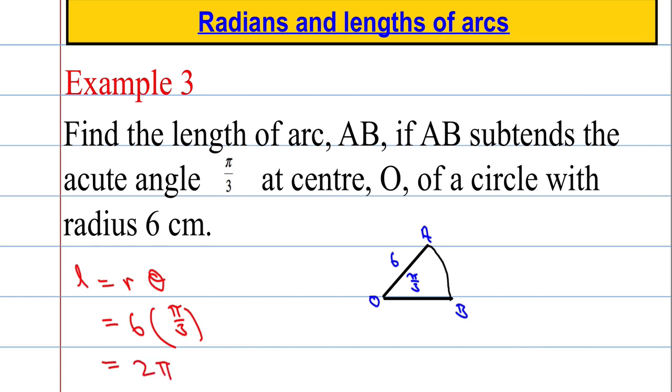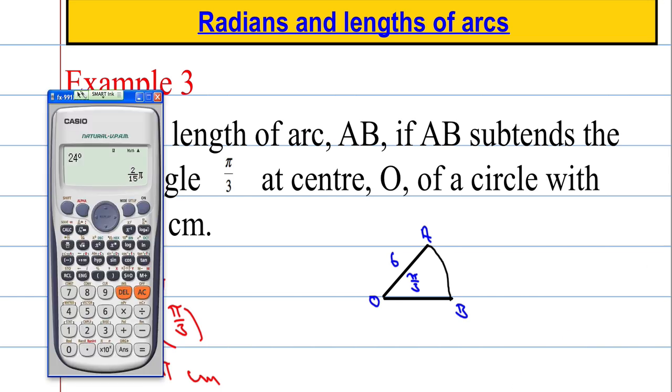So L equals r times theta, which is going to equal 6 times π over 3, which is going to give us 2π. We can leave our answer like that, 2π centimetres. We could convert it if we wish. If we're looking for an answer to 3 significant figures, it equals 2π, there we go, to 3 sig fig it would be 6.28.